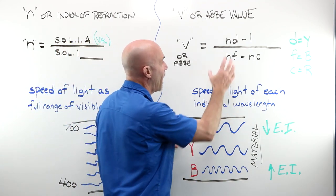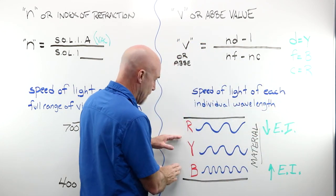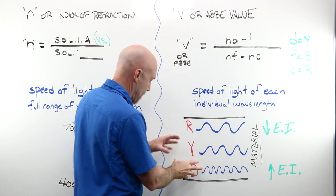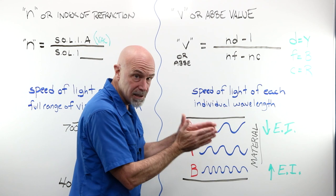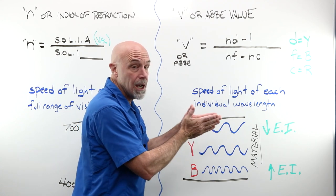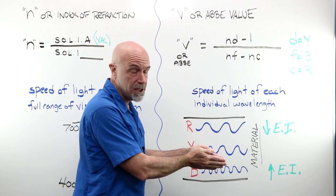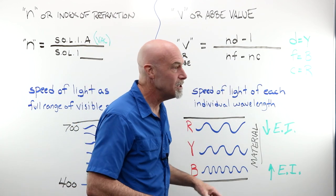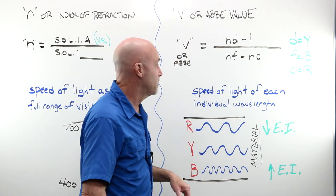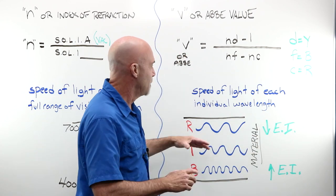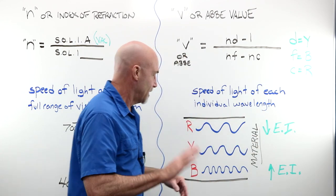Just like the index of refraction, we are simply assigning a numerical value or rewording the relationship between different things. What are those things that we are comparing? The speed of light, or index of refraction, of the individual wavelengths of light that make up the full visible spectrum. We pull out yellow, we pull out blue, and we pull out red.